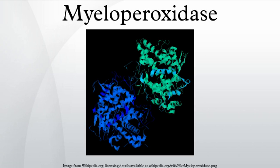MPO is a member of the XPO subfamily of peroxidases and produces hypochlorous acid from hydrogen peroxide and chloride anion during the neutrophil's respiratory burst. It requires heme as a cofactor. Furthermore, it oxidizes tyrosine to tyrosyl radical using hydrogen peroxide as an oxidizing agent. Hypochlorous acid and tyrosyl radical are cytotoxic, so they are used by the neutrophil to kill bacteria and other pathogens.